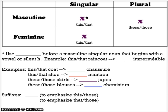Now, because they're adjectives, remember that in French, those adjectives must agree in gender and number with the nouns they modify. Therefore, you're going to have a masculine singular form, a feminine singular form, a masculine plural form, and a feminine plural form. The good news is these adjectives come before the nouns, just like in English.